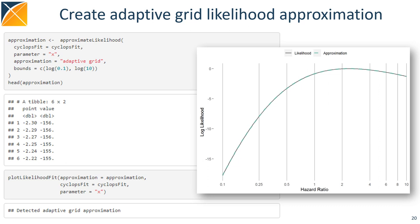Instead, we can use the approximate likelihood function to create an adaptive grid approximation. As you can see, the function requires the Cyclops regression object as input to learn the actual shape of the likelihood function. The approximation is just a set of points on the log hazard ratio scale with the corresponding log likelihood values. As you can see in the plot on the right, this approximation does fit the true likelihood very well.